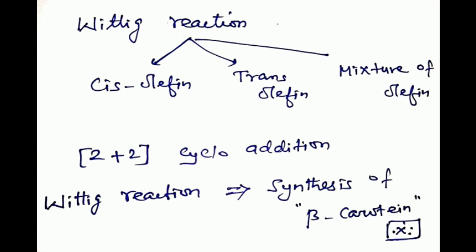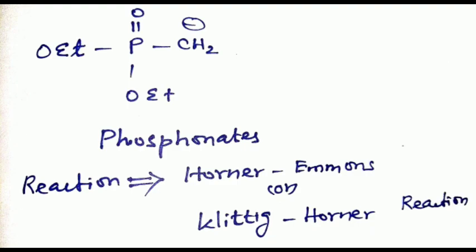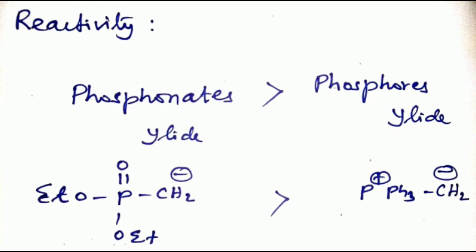The reaction of ylides with carbonyl compounds is a 2+2 cycloaddition. Wittig reactions are useful in synthesis — for example, in the synthesis of beta-carotene, which contains many conjugated double bonds. Sometimes phosphonates are used in place of phosphorus ylides in Wittig-type reactions; these are named Horner-Wadsworth-Emmons reactions. Generally, the reactivity of phosphonates is greater than that of phosphorus ylides.